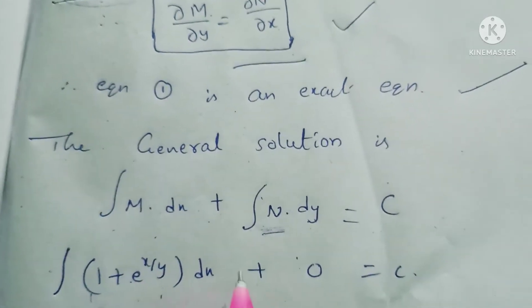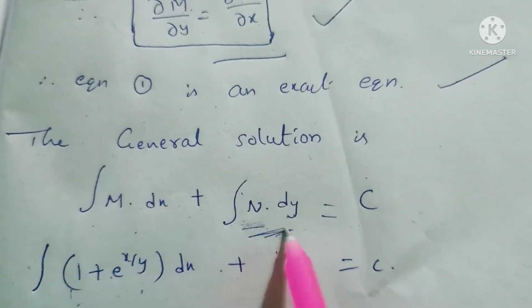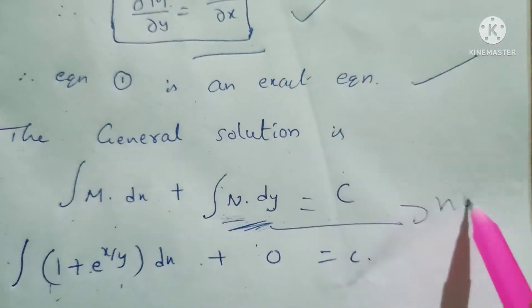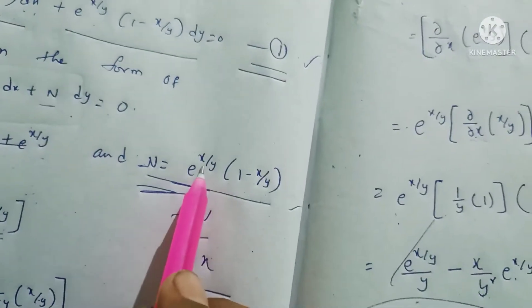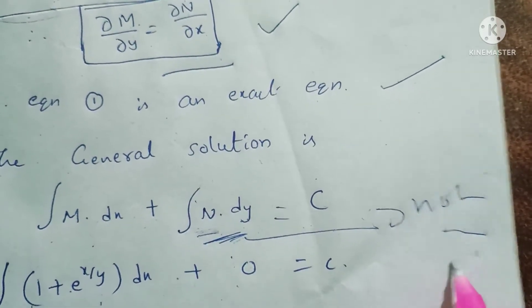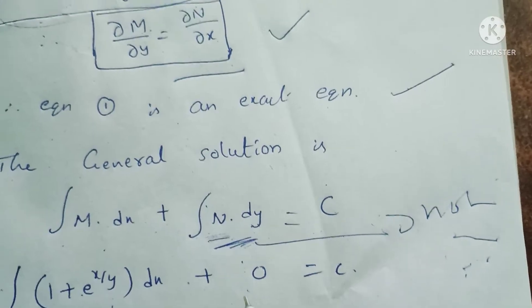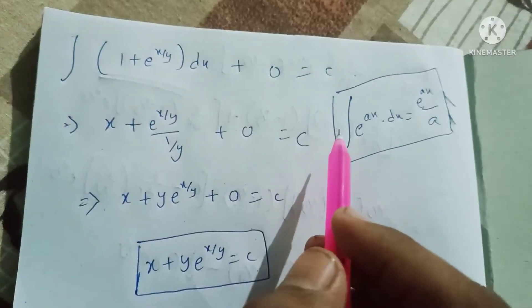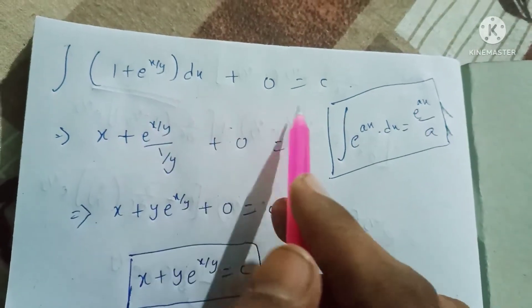Integral M dx: the integral N dy contains only terms with x, so integral N dy treating only non-x terms equals 0. Therefore the solution reduces to integral of 1 plus e power x by y into dx plus 0 is equal to c.